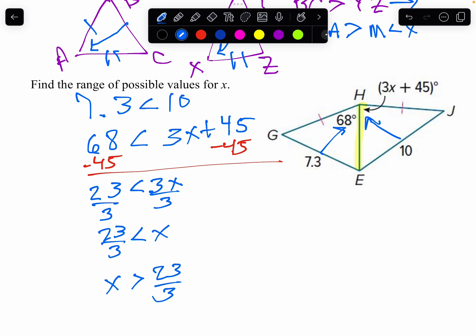Which is true. X is bigger than 23 thirds. But I also got to think, hey, I've got a triangle. It's not bigger forever. X can't be 1,000 because you only have how many degrees in a triangle.